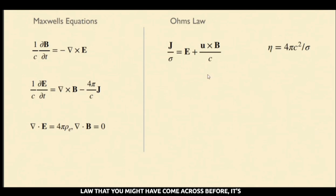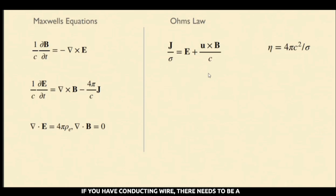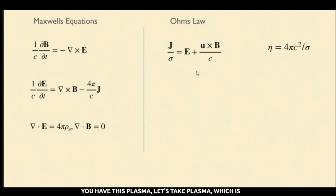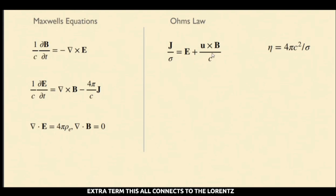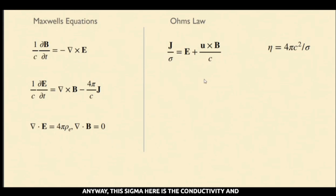The form of Ohm's law you might have come across before is more like V equals IR. But when you have a moving plasma with a magnetic field in it, you put in an extra term: u cross B. We are looking at things in the lab frame — if you were in the frame of the moving fluid parcel, you would not get this extra term. This connects to Lorentz transformations. Here sigma is the conductivity and the inverse of that is the resistivity.